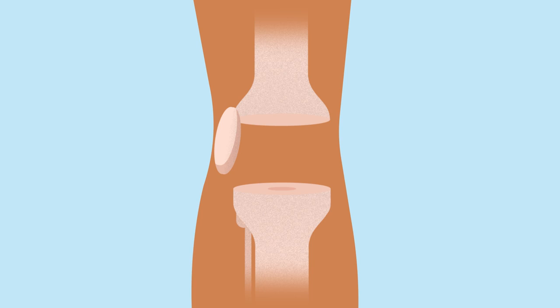They'll trim the worn or damaged surfaces from the bottom of your thigh bone and the top of your shin bone. They'll fit new surfaces onto both bones.